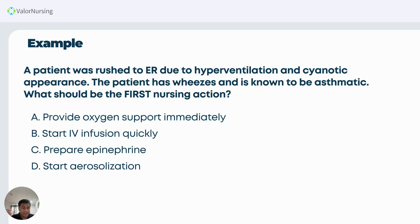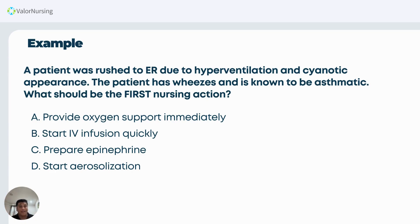Now is the right time to use the ABC model. Let's identify each option — whether it is airway, breathing, or circulation. Letter A: provide oxygen support immediately. Oxygen — when you think of oxygen, we give that for breathing. So letter A is breathing. Letter B: start IV infusion quickly. Intravenous infusion — that is an intervention for circulation. So letter B is circulation.